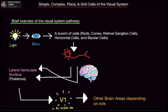Welcome back. In this video we're going to run over simple cells, complex cells, place cells, and grid cells of the visual system. This is going to be the first video of the neuroscience playlist that I'm making. I'm starting off with the visual system because I got a comment asking for a video on simple cells and complex cells — I'll add place cells and grid cells as well because I think it's also important.